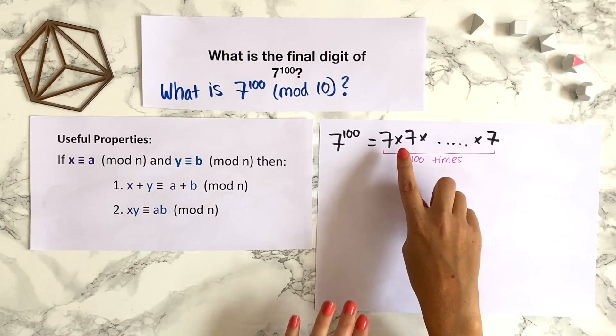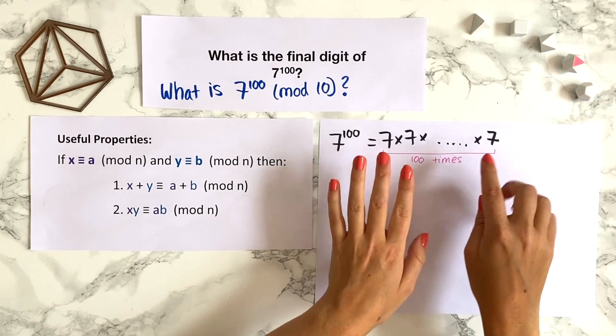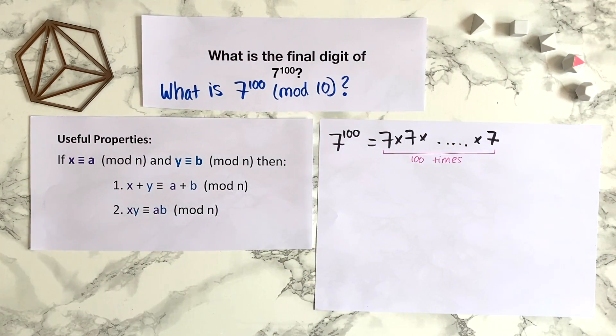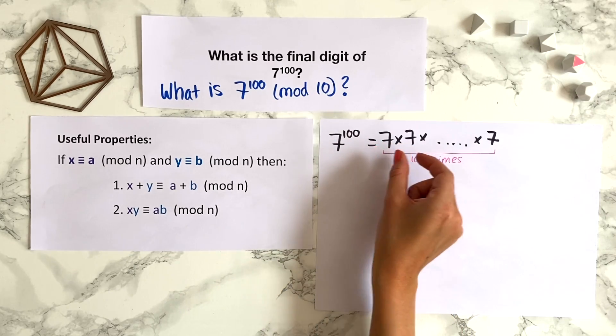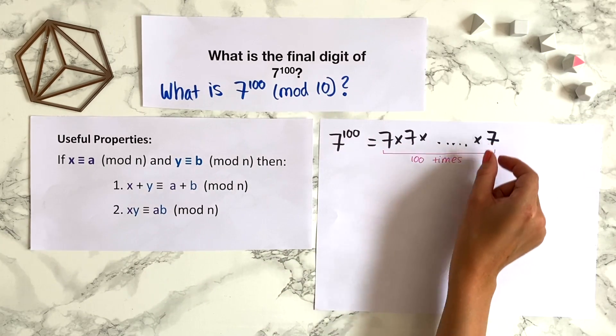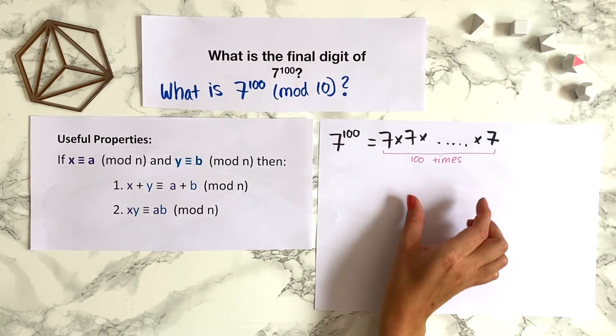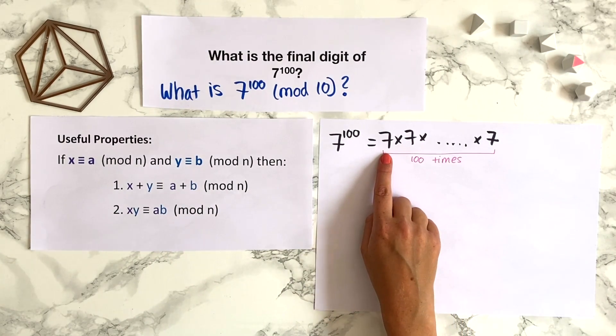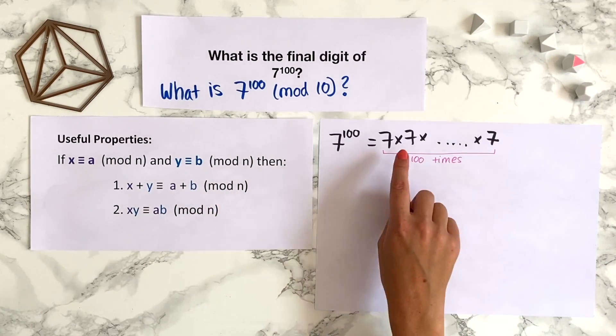Because we have a product we would quite like to use our theorem about products in modular arithmetic. So remember our theorem says that instead of working out 7 times 7 times 7, 100 times and then taking it modulo 10, instead we can work out individual components of the multiplication modulo 10 and then multiply the result of that together. But hold on a moment because 7 modulo 10 is just 7.